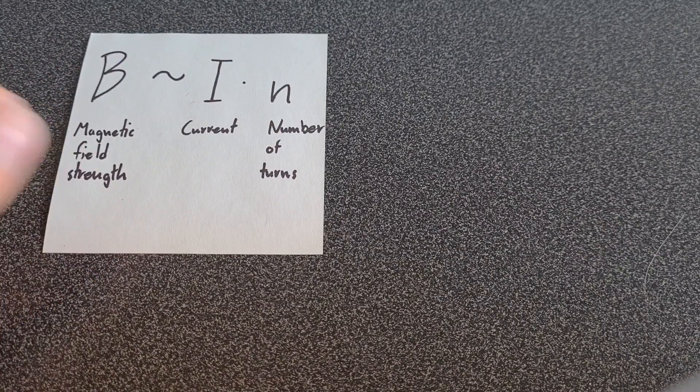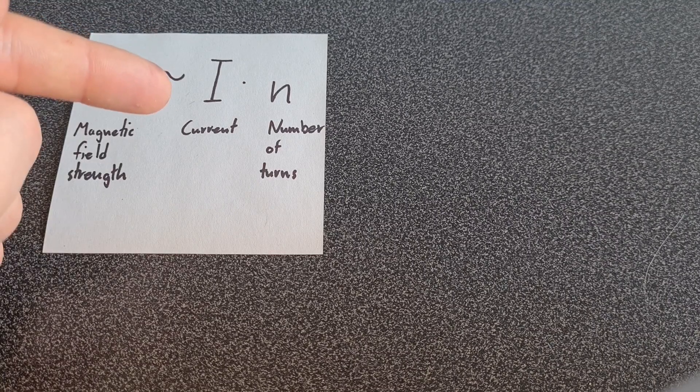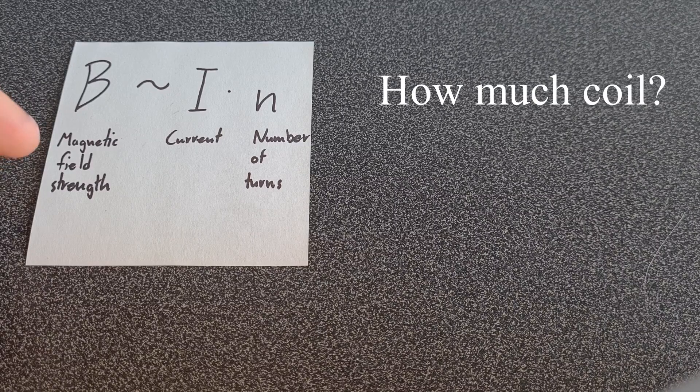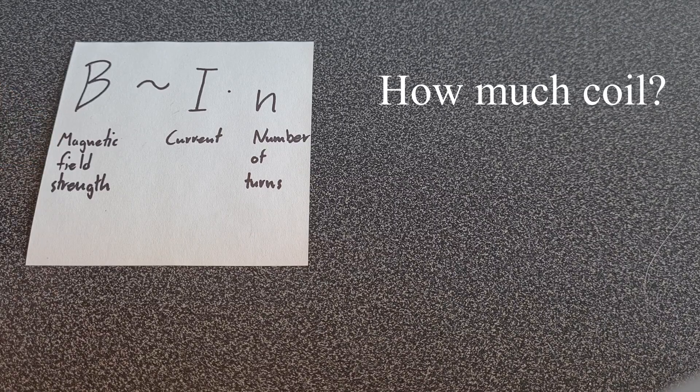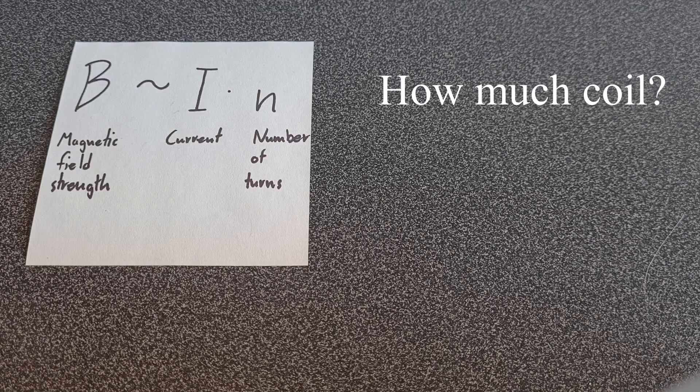To answer this question, we have the equation for the magnetic field strength of a coil. It's proportional to the current through the coil and the number of turns. Now the first question is, how much coil should we have? If you have a large coil, you will have less current because there's more resistance, but you will also have more turns.